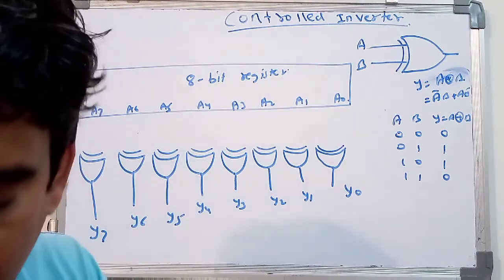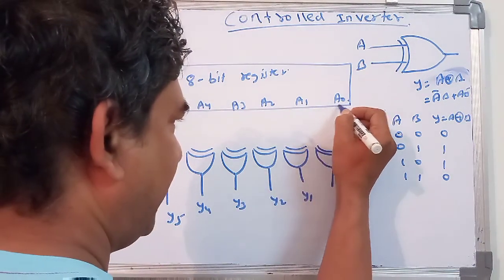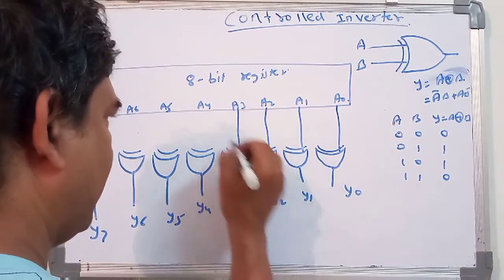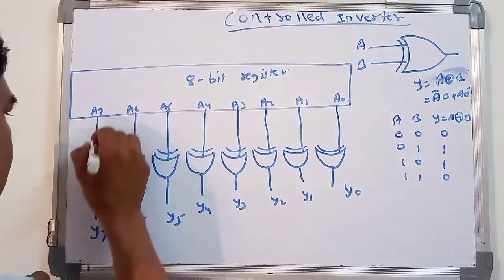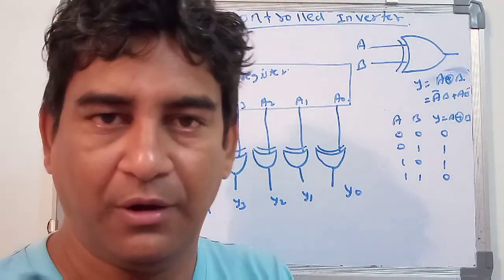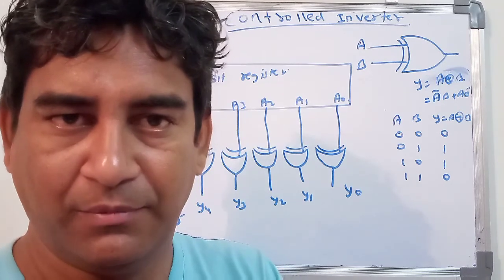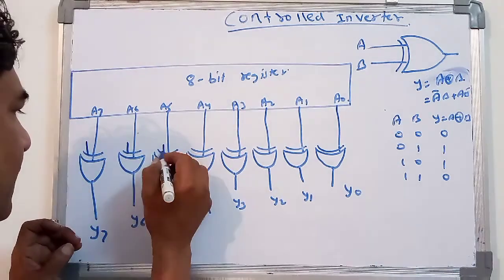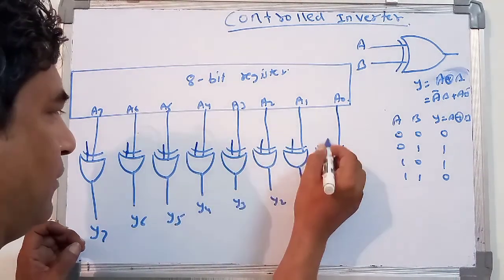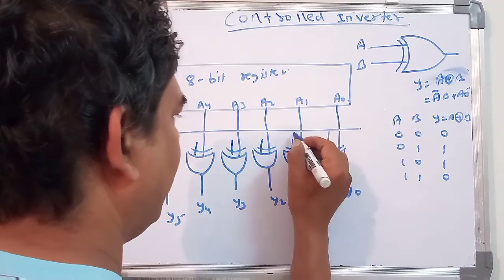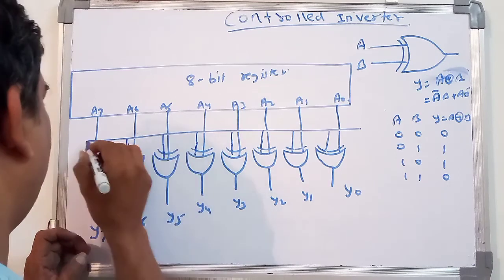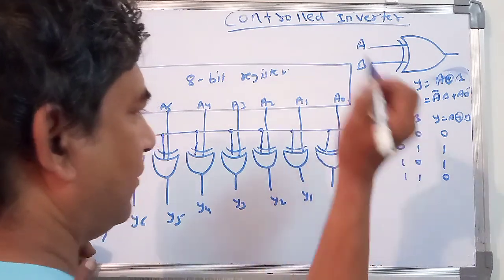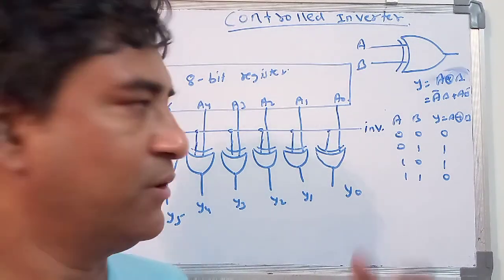The first input of each XOR gate is connected to A0 through A7. Each XOR gate has one input connected this way, and the second input of each XOR gate is connected to the inverter input — written as A_inv. Make all the connections accordingly.